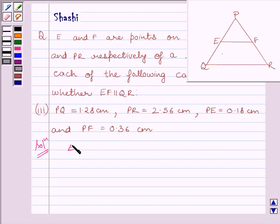So we can find EQ is equal to PQ minus PE. That is, EQ is equal to 1.28 minus 0.18. So we get EQ is equal to 1.1 cm.